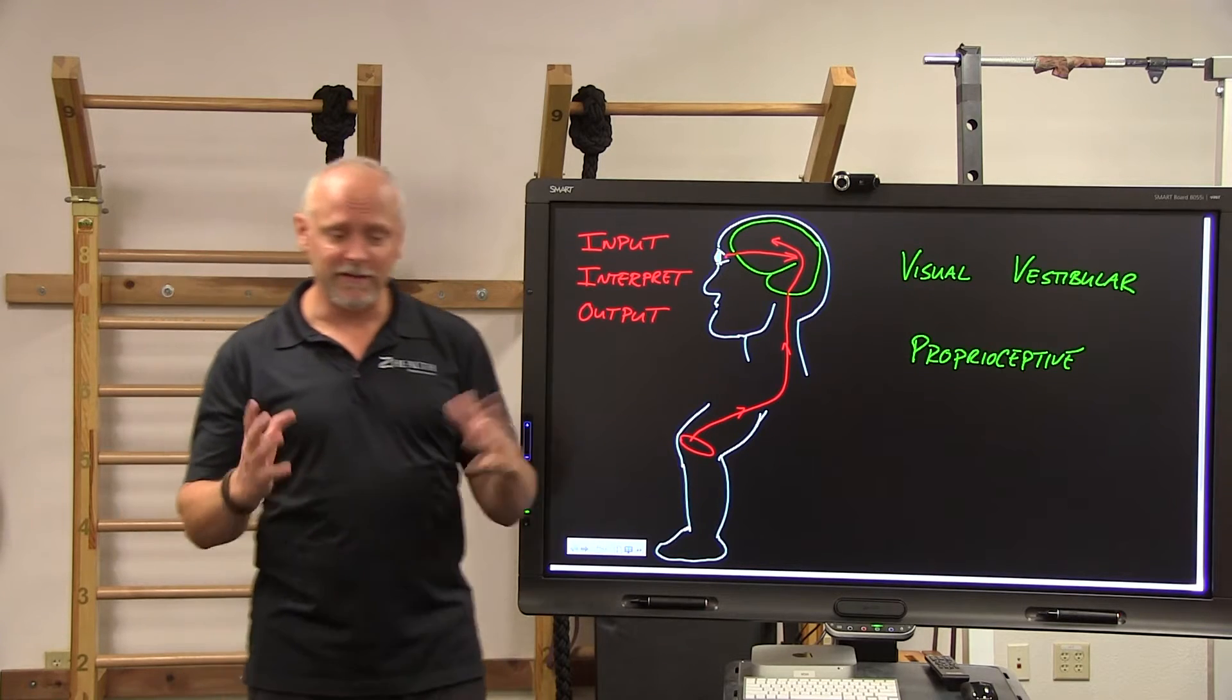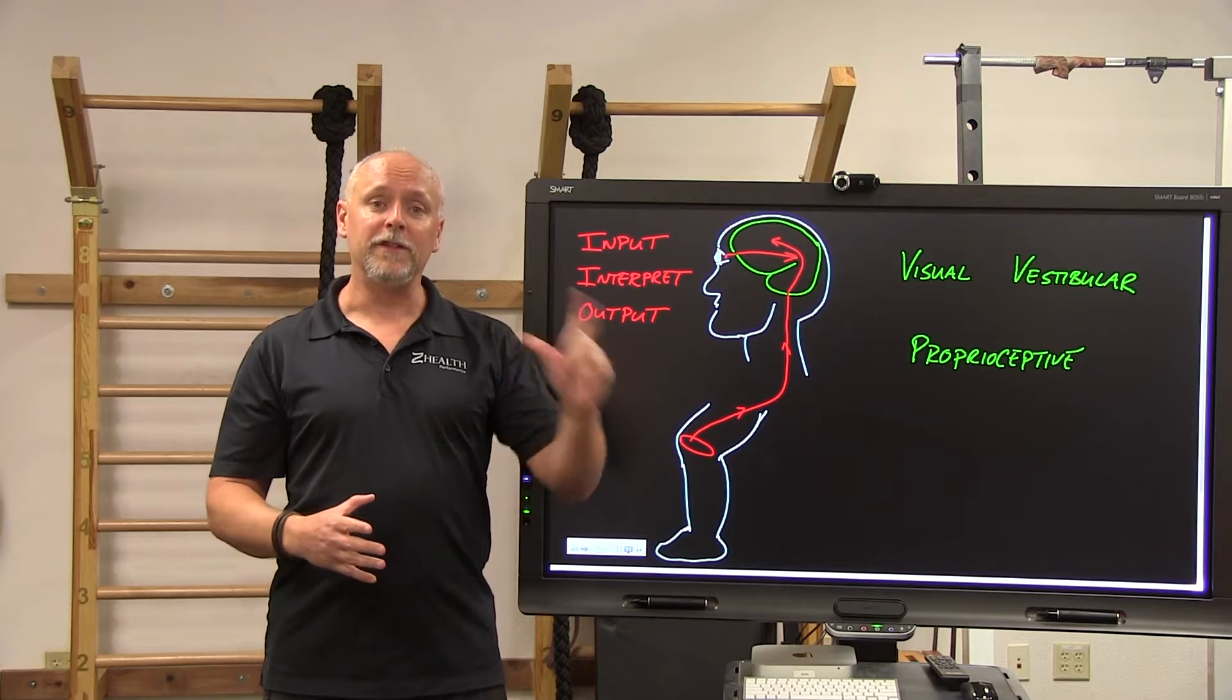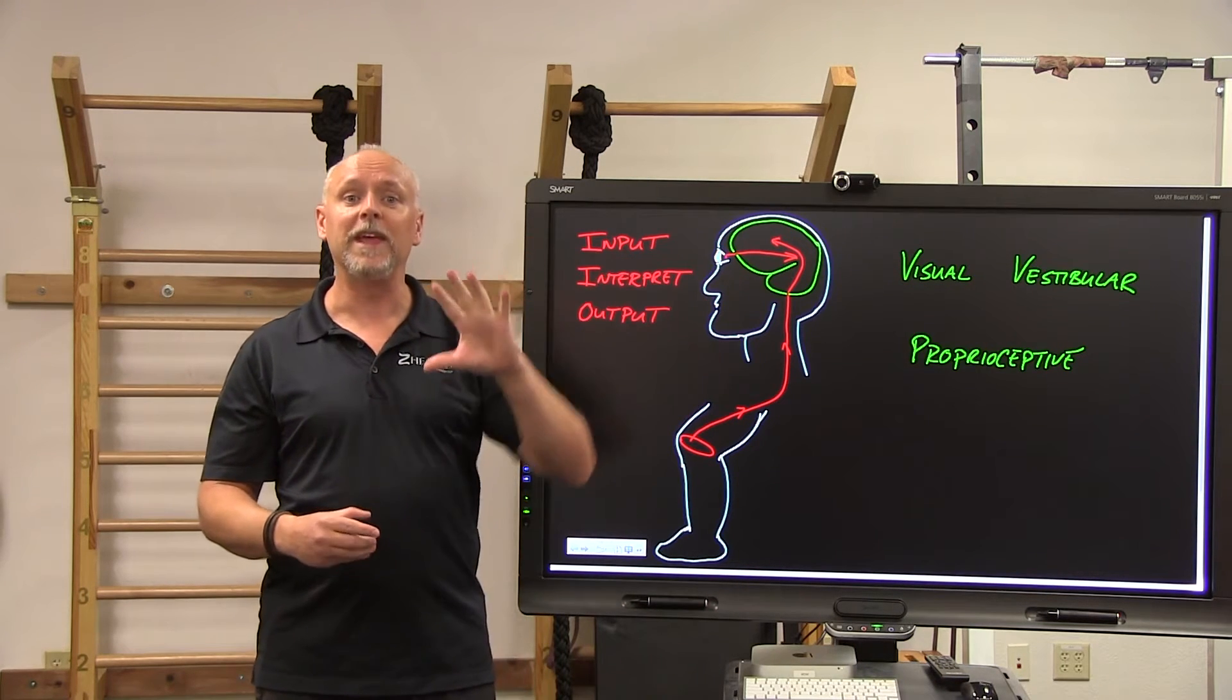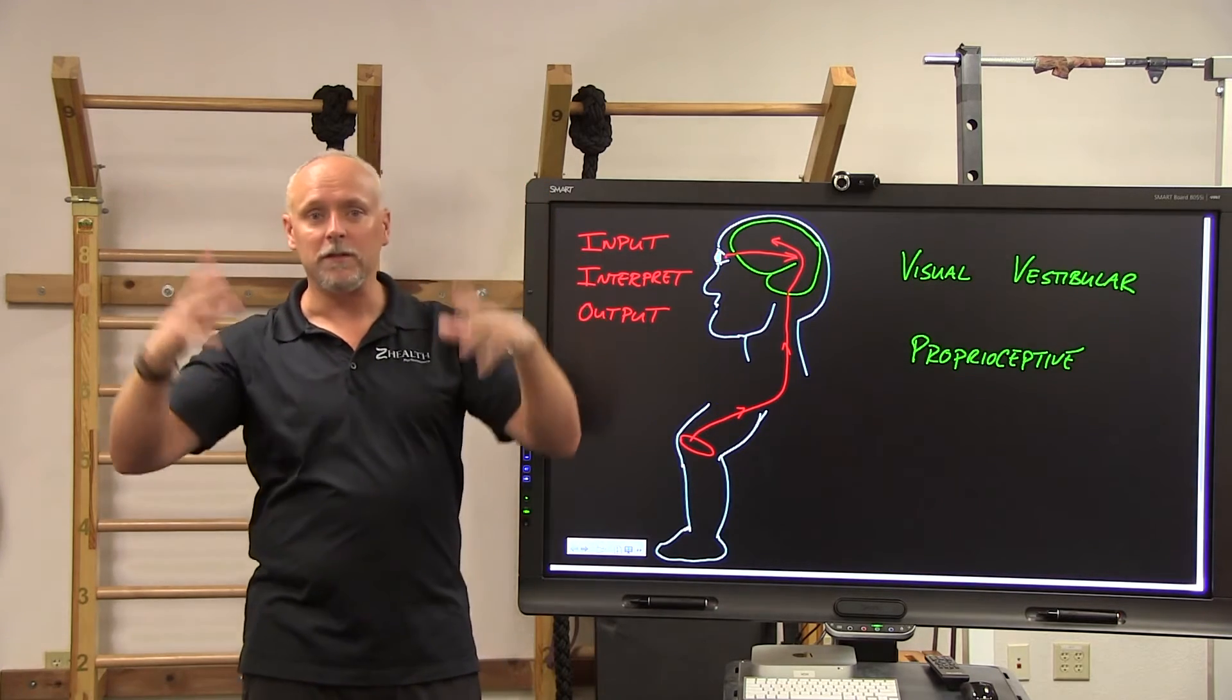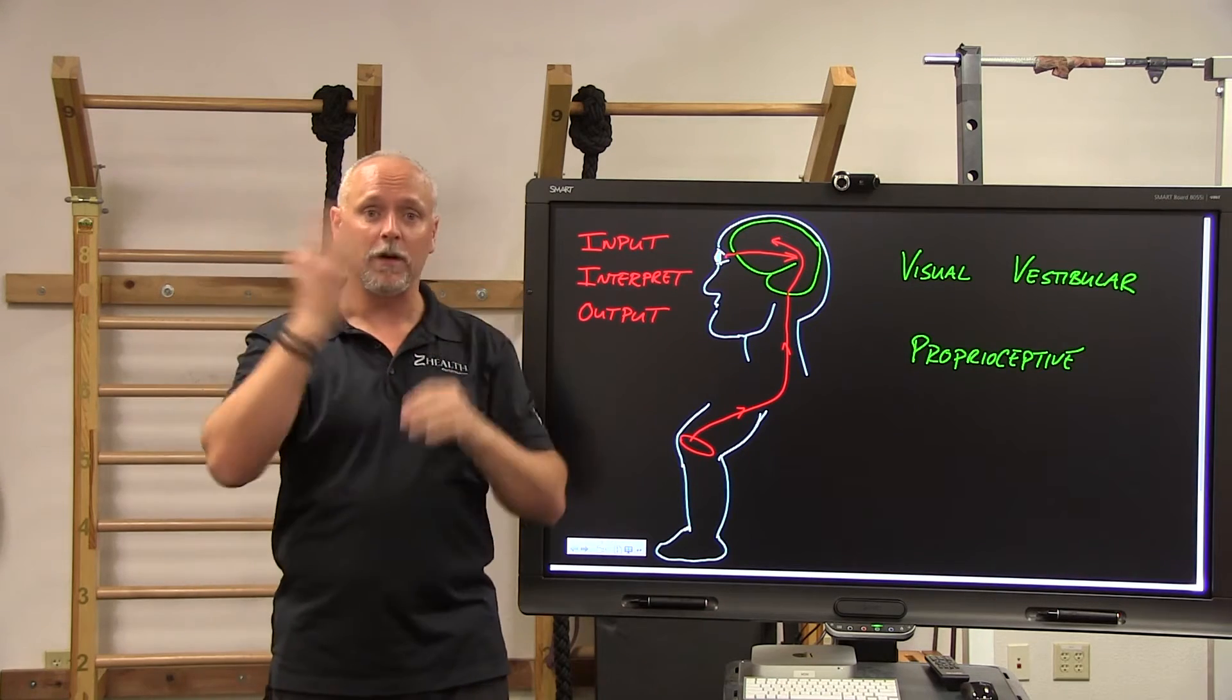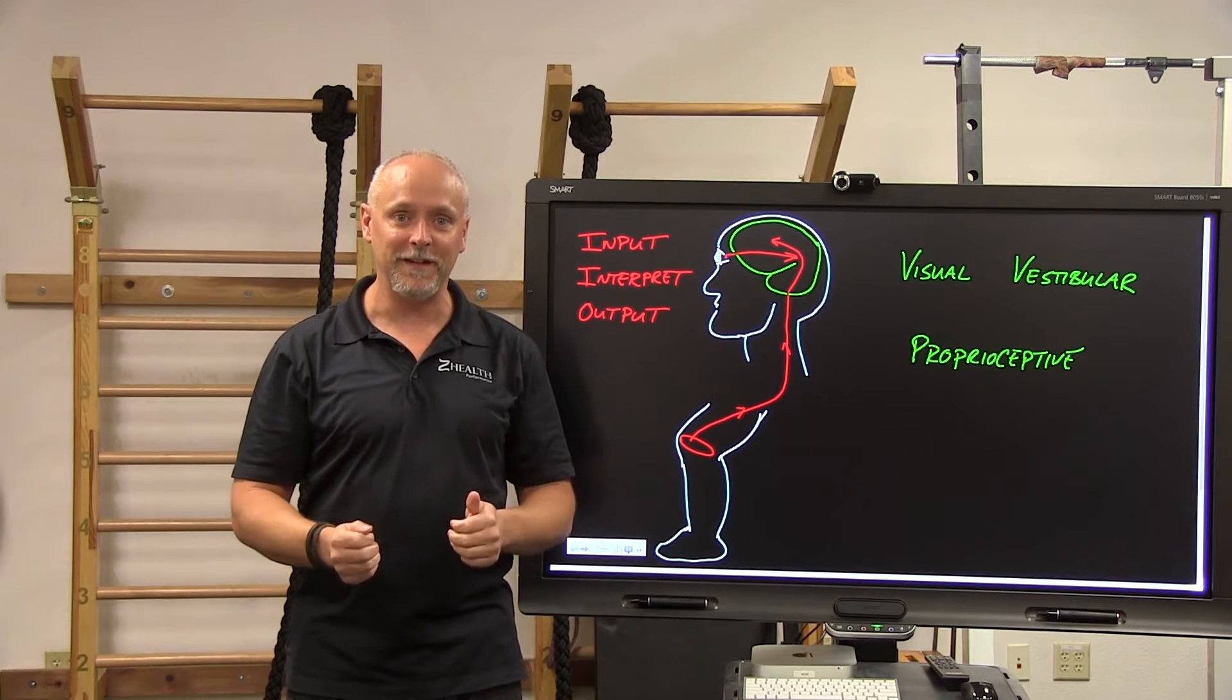In this study, what they did, and this is again why it struck me because it reminded me of one of the strategies that we use, is they took these athletes, they looked at their movement capacity and then they began retraining them by using what are called strobe goggles. Strobe goggles are goggles Nike used to make them, there are several other companies that make them, but basically they're exactly what they sound like. They're goggles that you put on and they create a strobe effect which reduces the amount of visual input that you receive.